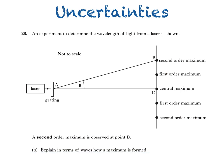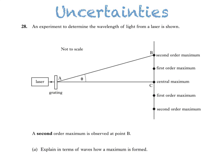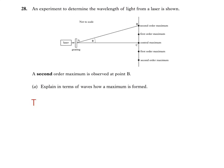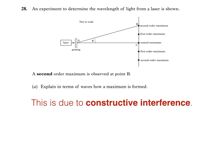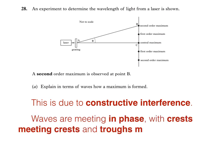When answering this question, the first thing we can say is that this is due to constructive interference. We can also say that at point B, or any other maximum, waves are meeting in phase, with crests meeting crests and troughs meeting troughs at that point.